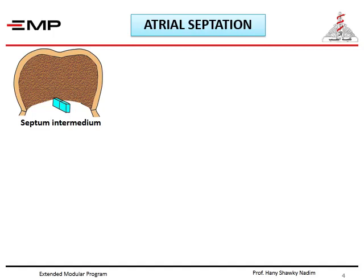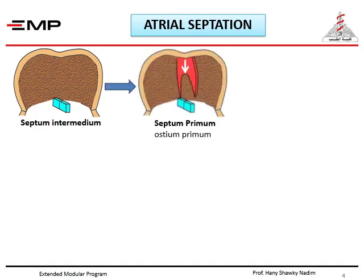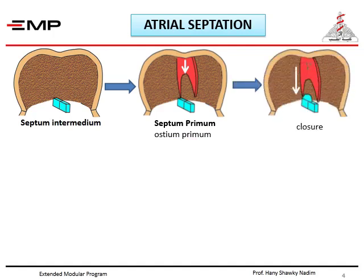Now two septa begin to grow from the roof of the atrium. The first one descends like a crescent from the roof, called septum primum. The opening below the septum primum — between it and the septum intermedium — is called ostium primum. Gradually, as the septum descends, the ostium primum becomes reduced until it is closed totally by descent of the lower border of the septum primum and also by upward growth from cells of the dorsal endocardial cushion.